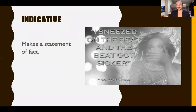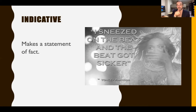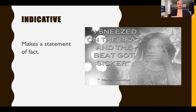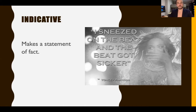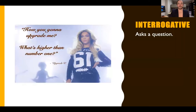The first one I want to talk about is the indicative — this is just the type of sentence that makes a statement of fact. This might be something like 'the piece of paper is on the table,' or Beyoncé's 'I sneezed on the beat and the beat got sicker.' These are facts. Now, an indicative grammatical mood does not necessarily have to be true — it states the thing as if it were true. Anytime we make an assertion, that's the indicative.